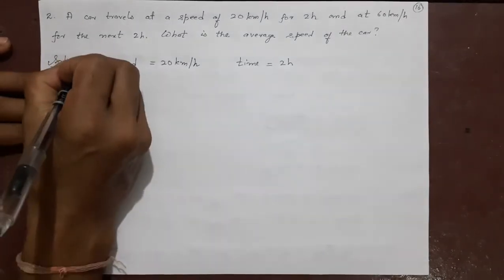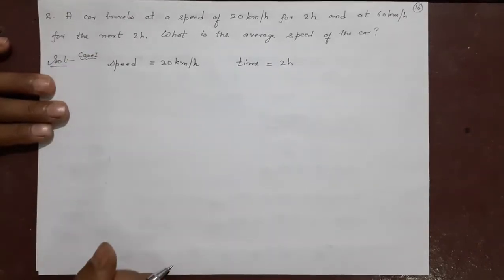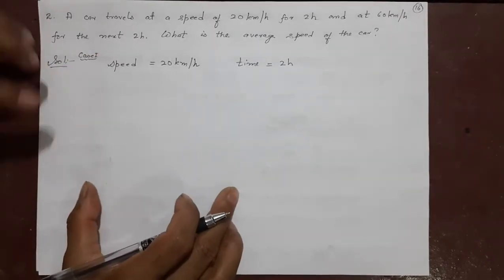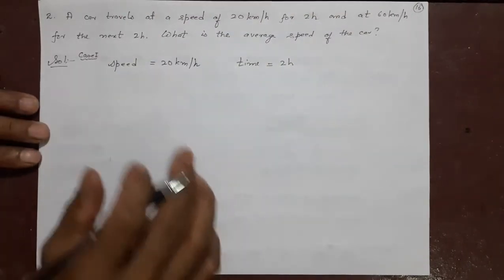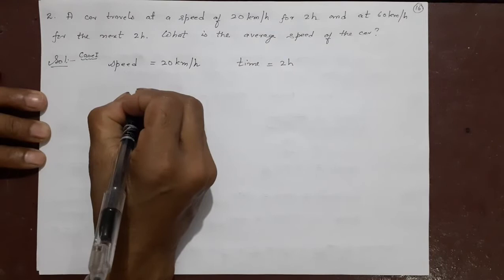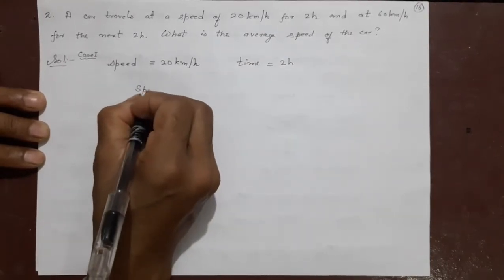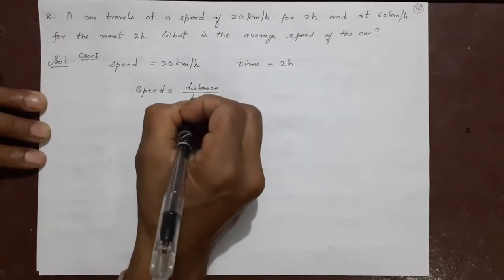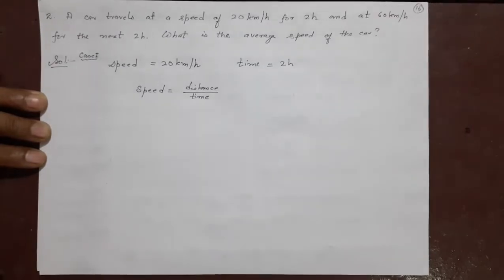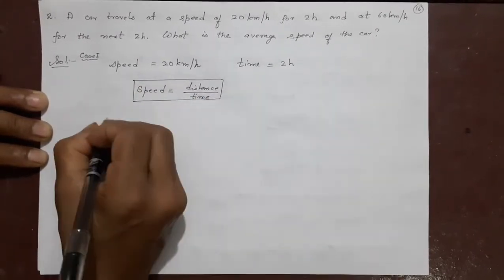So first part I will write case 1. Case 1, this is happening. After case 2, what will happen? Speed will change to 60 km per hour in the next 2 hours. So here, the speed and time are given. What is the formula? Speed equals distance by time. This is the formula. Do not forget this.